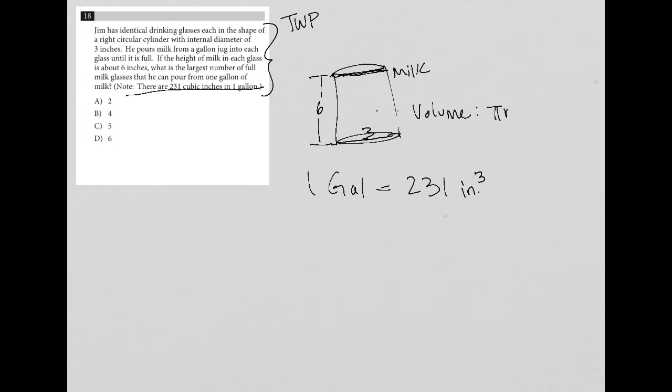So we're going to have pi, r is half the diameter. We know the diameter is three, so the r must be 1.5. So it'll be 1.5 squared.